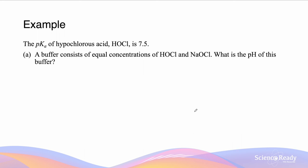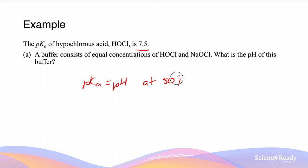Here we will look at an example of a buffer question. We're given that the pKa for hypochlorous acid is 7.5. The buffer consists of equal concentrations of HOCl and NaOCl — what is the pH of this buffer? Since the conjugate base and acid concentrations are equal, the system must be 50% ionized. We know that pKa equals the pH at 50% ionization, therefore the pH must equal 7.5.